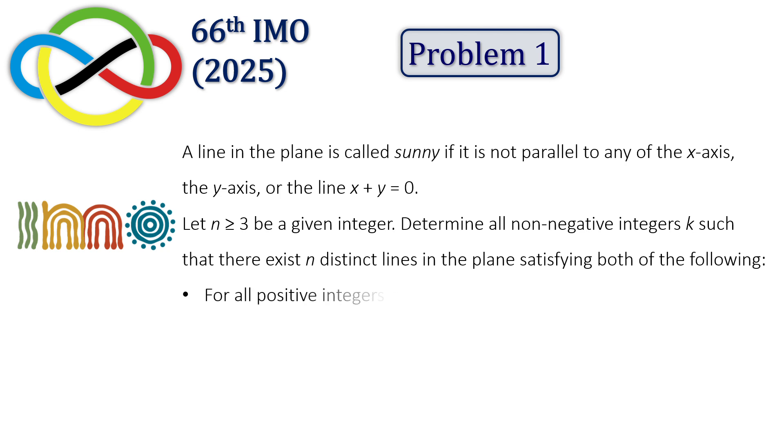For all positive integers a and b with a plus b is less than or equal to n plus 1, the point (a, b) lies on at least one of the lines, and exactly k of the n lines are sunny.